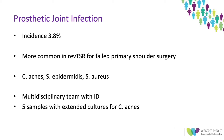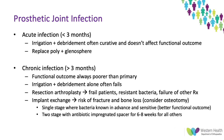Moving on to prosthetic joint infection — the incidence in the study was approximately 3.8%. This is likely an underestimate, as many stiff shoulders may in fact be chronically infected with low-virulence organisms such as C. acnes. It's more common in patients who have had prior shoulder surgery, and the most common bacteria are C. acnes, staph epidermidis, and staph aureus. A multidisciplinary approach with infectious diseases involvement is essential, and at revision at least five samples with extended cultures for C. acnes should be sent.